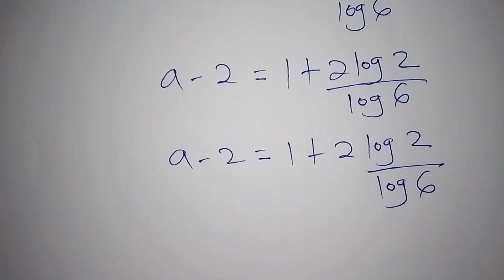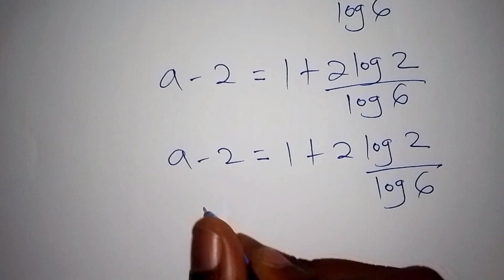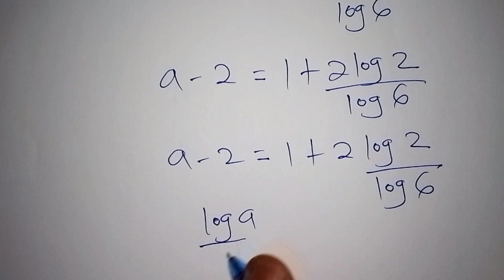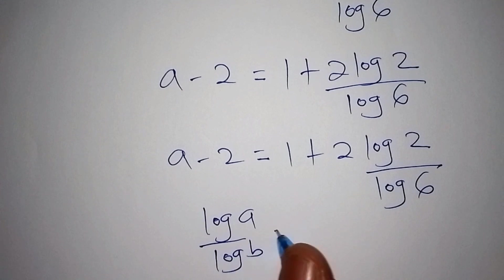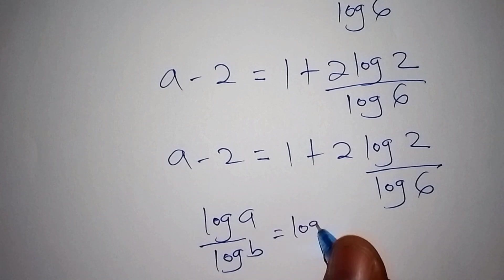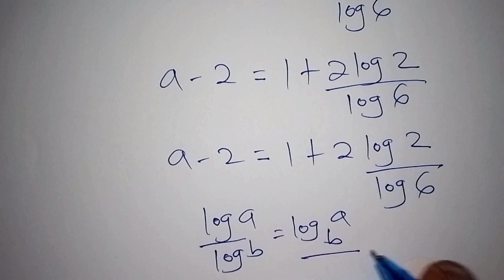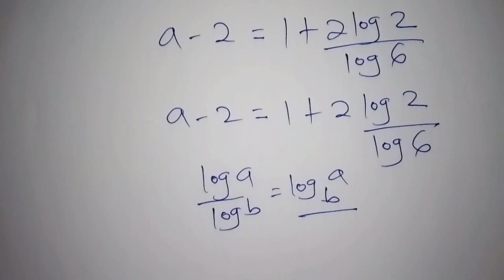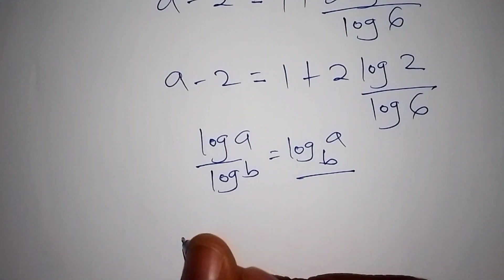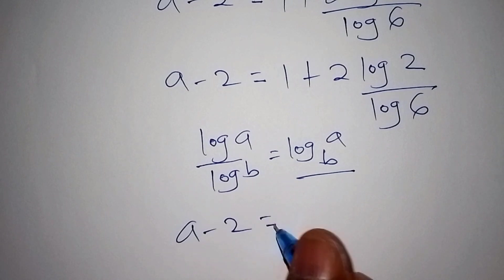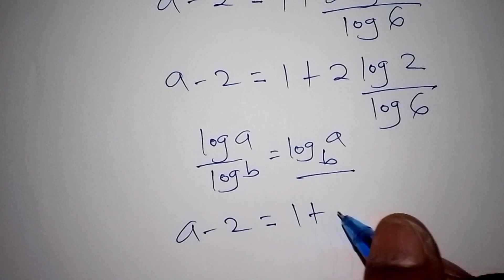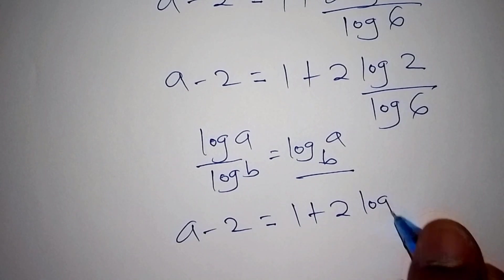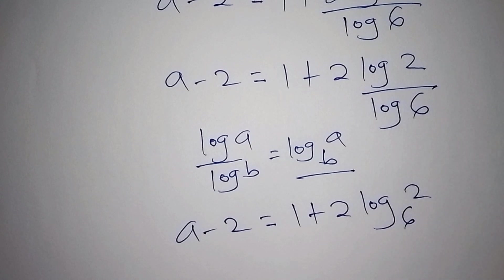Now, recalling that log a over log b can also be written as log of a to the base of b, I want us to express log 2 over log 6 in this form. So a minus 2 is equals to 1 plus 2 times log of 2 to the base of 6.